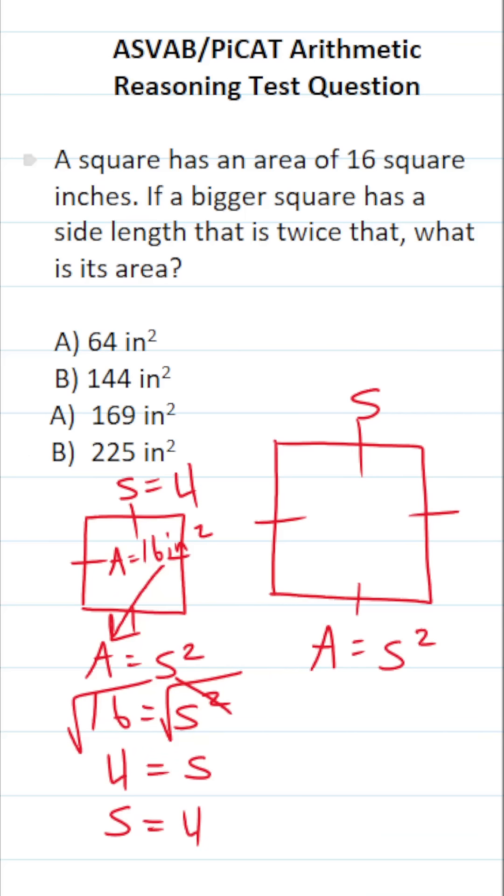Now, according to the problem, the bigger square has a side length that is twice that. So, in other words, this side length here is 2 times 4. 2 times 4 is 8.